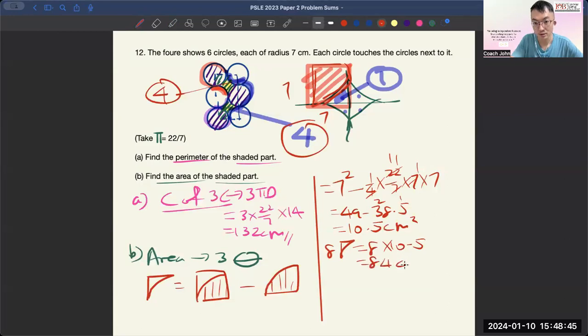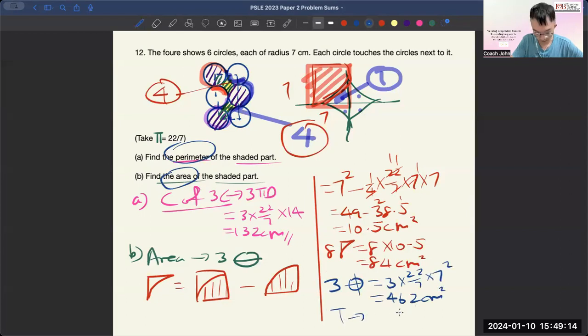Not forgetting, this is the area. You have three circles, so 3π r squared. Using a calculator, you get 462 cm squared. Then you add together to get 546 cm squared. I skip all the calculations because by now you should be able to do this.